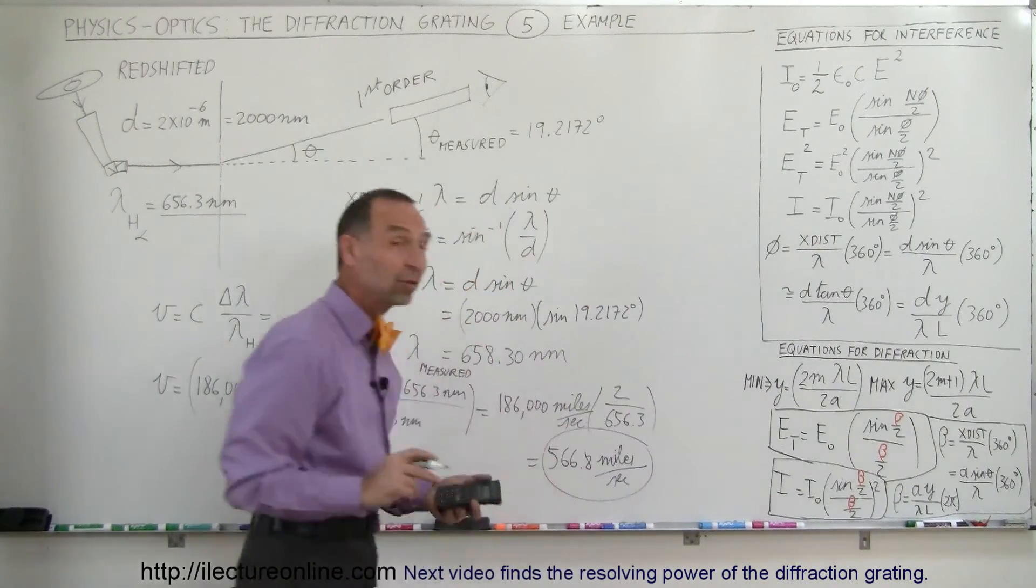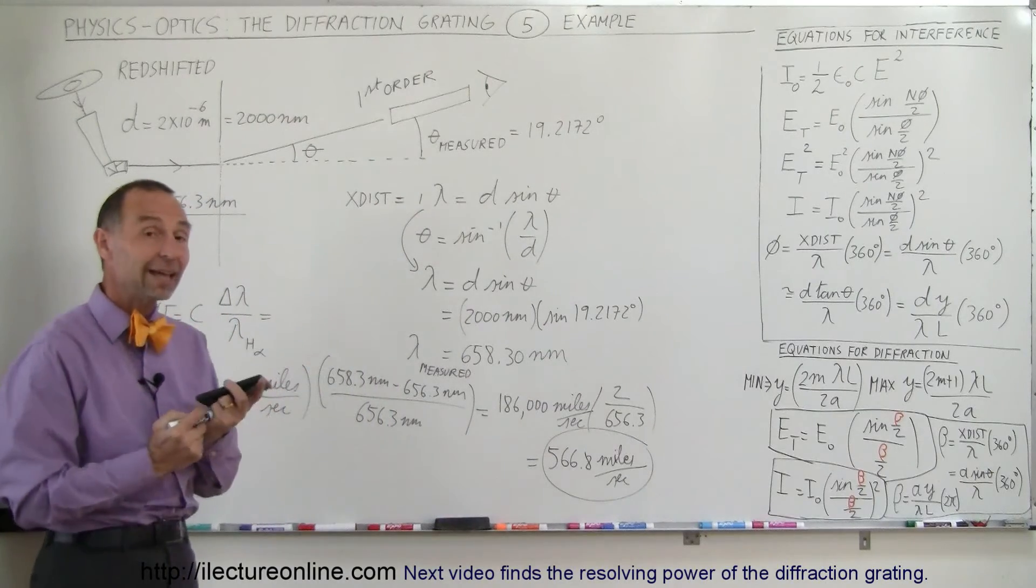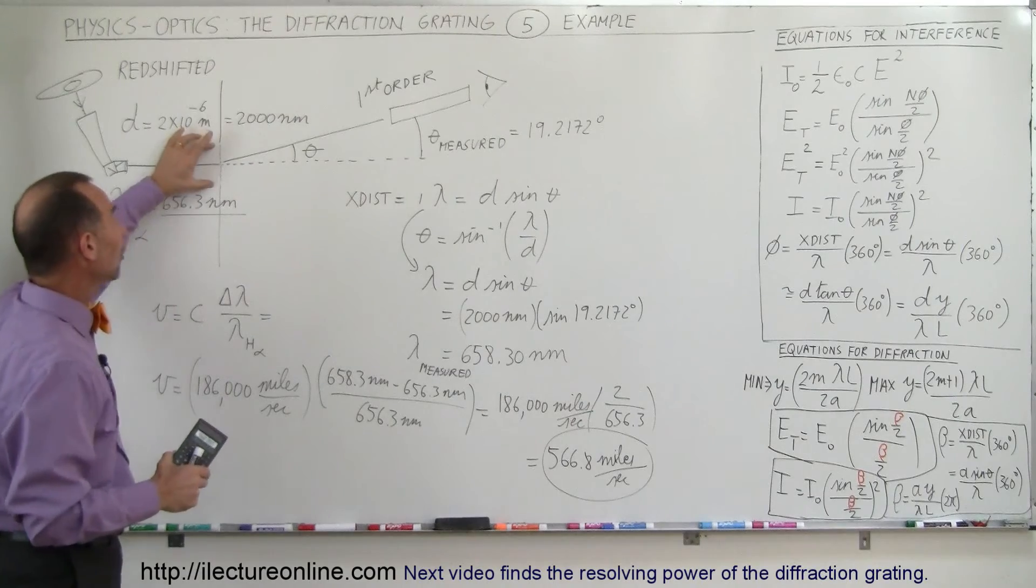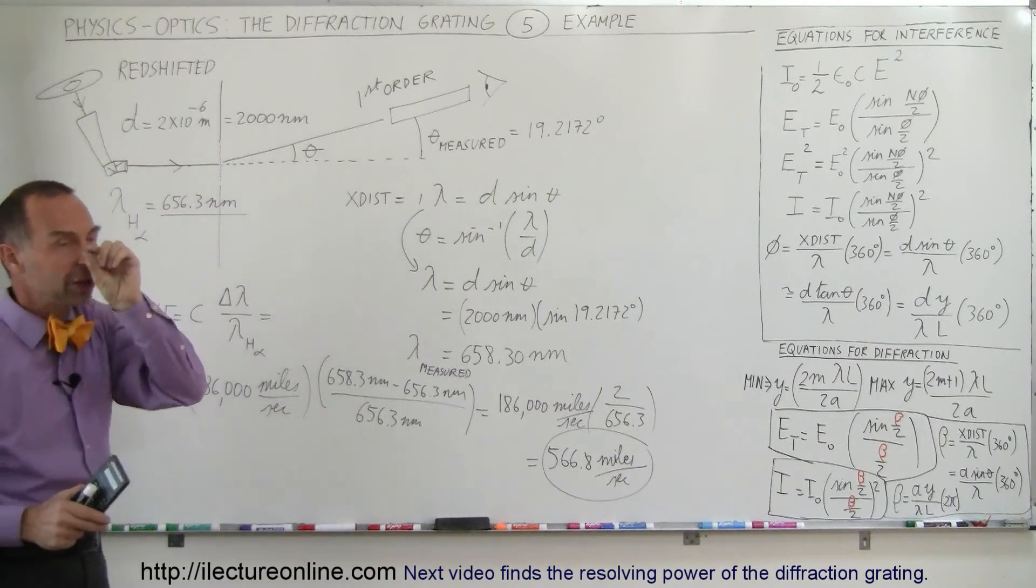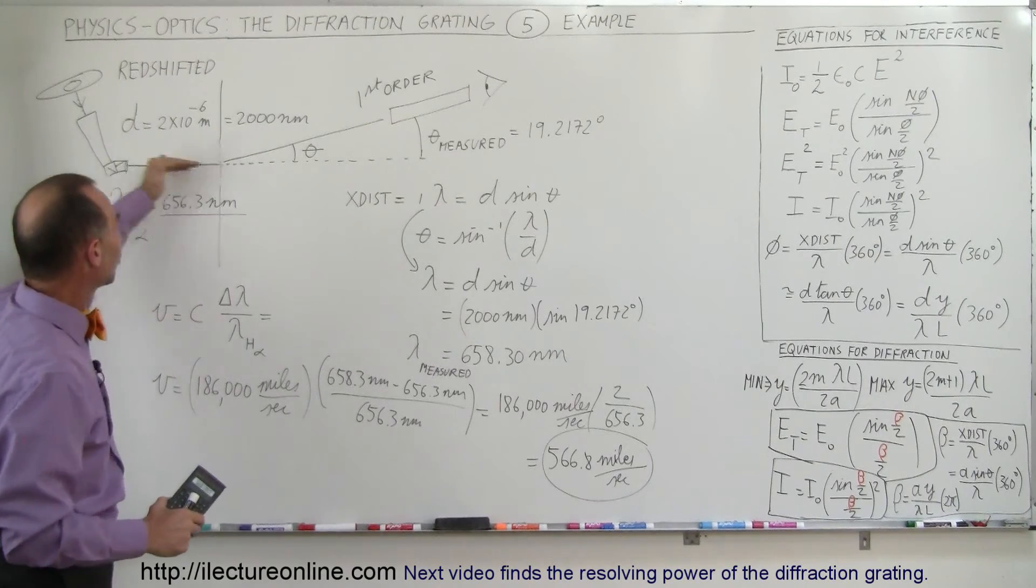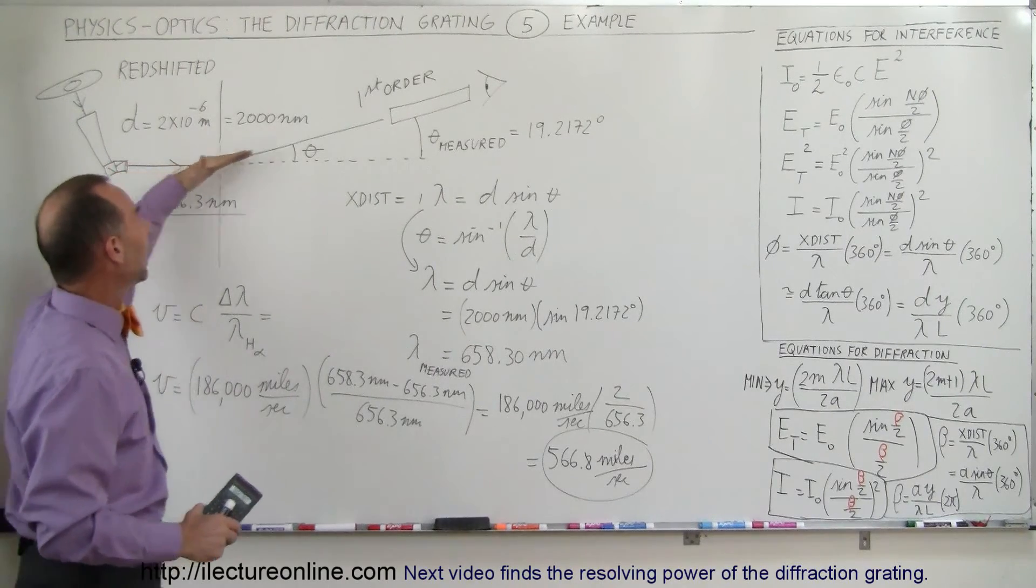And that would be the speed at which that galaxy would be moving away from us. Again, it all comes down to having the ability with a diffraction grating where the slits are really, really close together. In this case, they're only 2 micrometers apart from one another. We send the light through the diffraction grating. It will bend or diffract, so to speak.